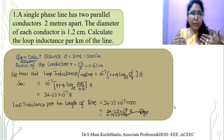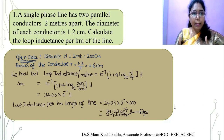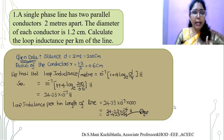There are two conductors which are parallel and the distance between the two conductors is two meters apart, and the diameter mentioned is 1.2 centimeters. We need to convert the diameter as well as the distance between the two conductors into centimeters. The distance is two meters, that is 200 centimeters, and the radius of the conductor is 0.6 centimeters.